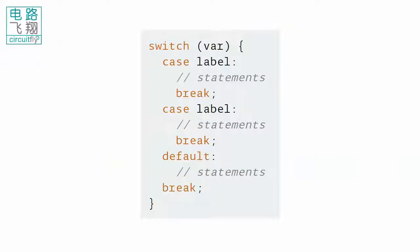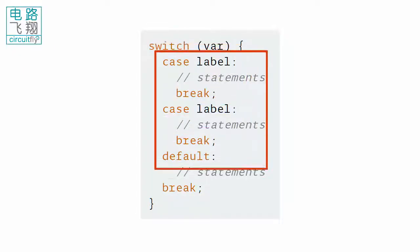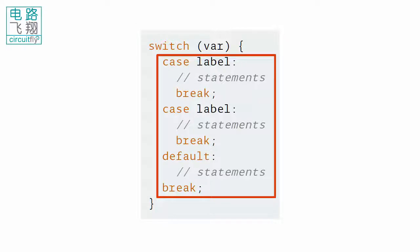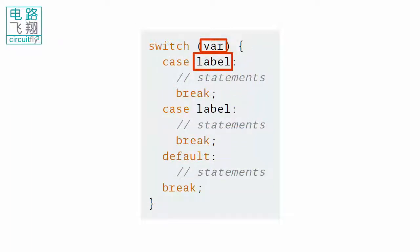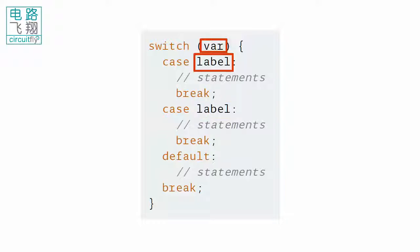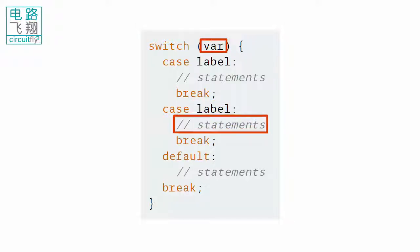The syntax of the switch case statement is switch, followed by a bracket containing a variable, within curly brackets. The switch statement compares the value of the variable to the value specified in each case statement. When a case statement is found whose value matches that of the variable, the code in that case statement is run.